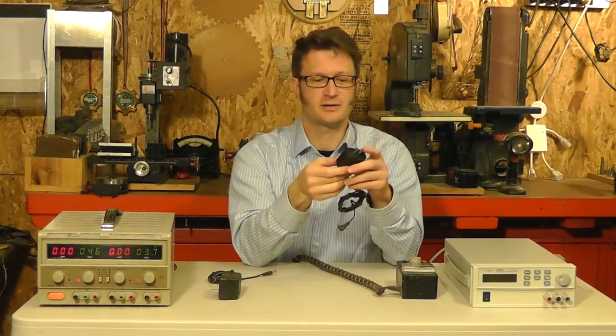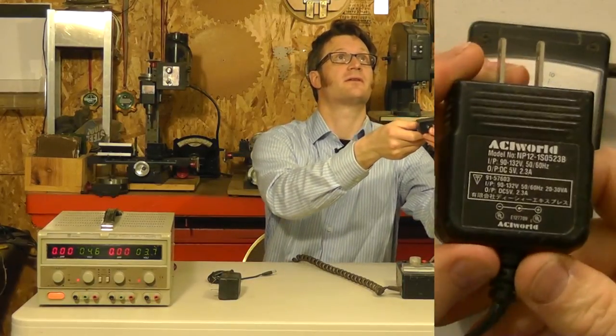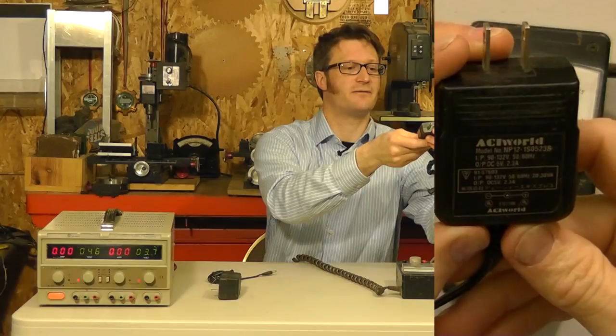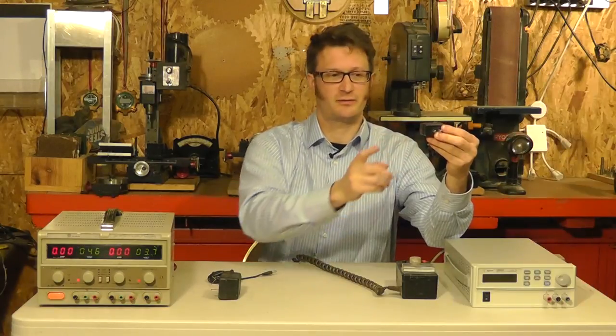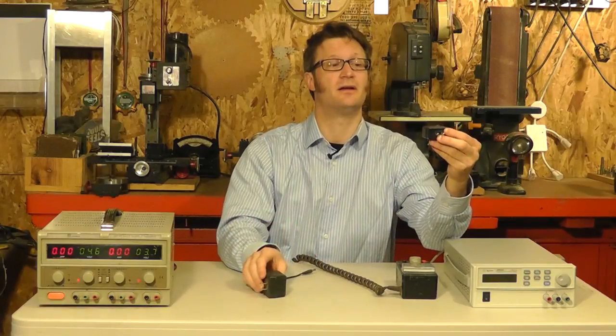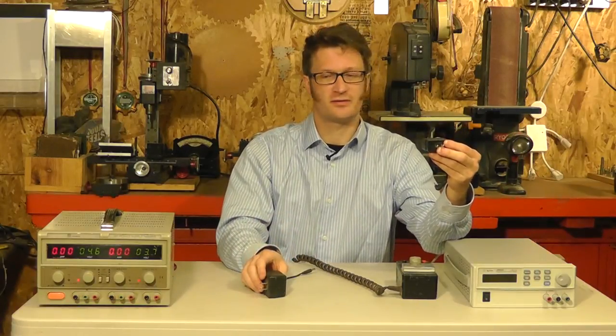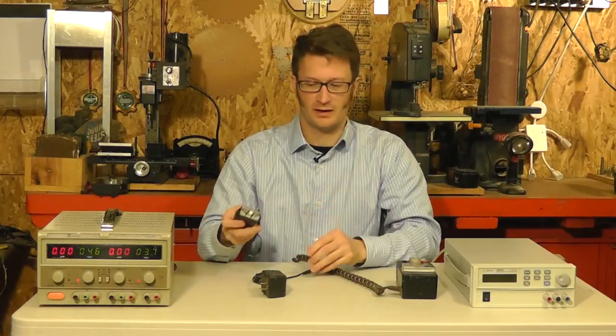On the other hand a switching regulator like this one, this one's a five volt DC 2.3 amp. So this one packs a lot more punch as far as current than my other one did. And this one's going to put out more or less exactly five volts all the time.